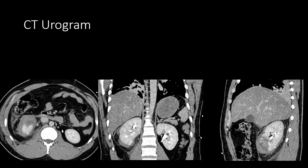To further evaluate the integrity of the collecting system, a CT urogram was performed. If the lacerations had been identified while the patient was still on the CT table, a 10-to-15-minute delayed scan could have served the same purpose. On the urographic phase, a very small amount of hyperdense contrast is seen along the renal capsule. The collecting system is filled with contrast on this delayed phase, and the area of hyperdensity along the capsule is consistent with leak from the collecting system. This confirmed the injury was actually a grade four laceration, not grade three.